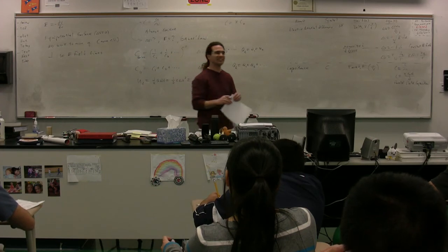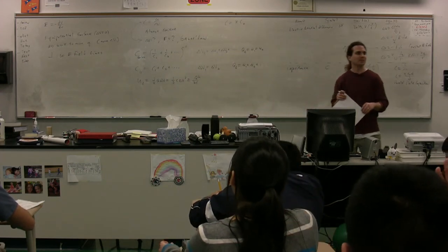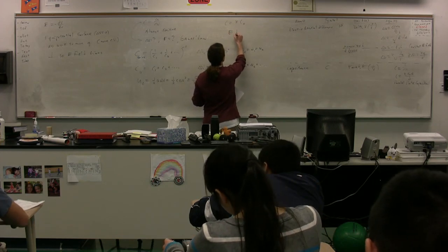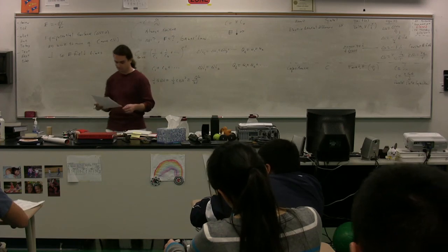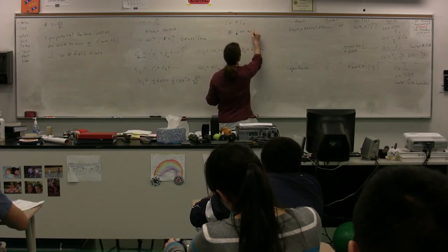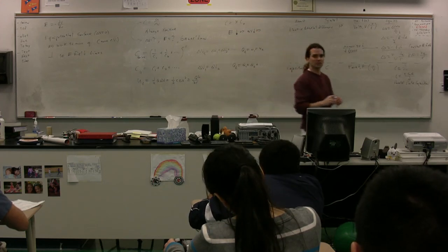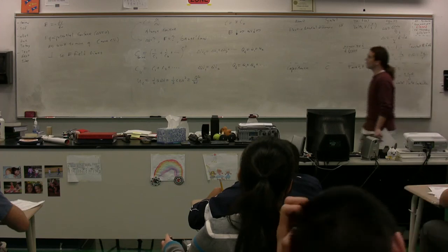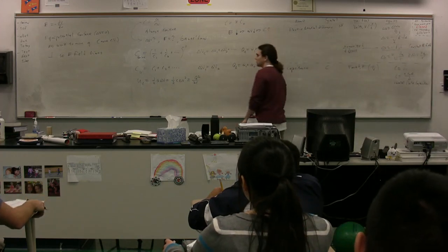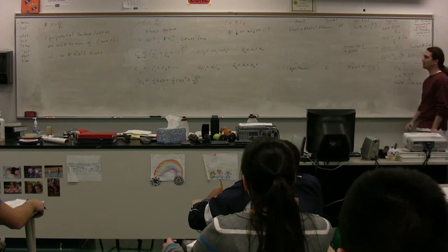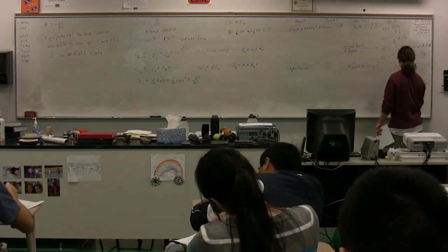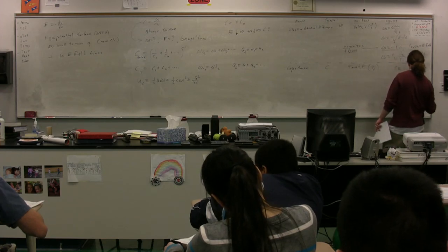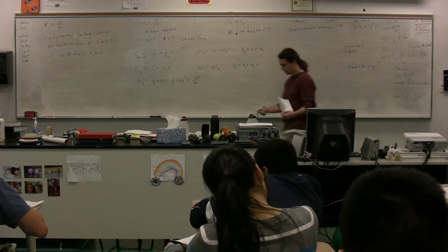The capacitance equals K, the dielectric constant, times C₀. The addition of a dielectric increases the capacitance of a capacitor. How? It decreases the electric field, which decreases the electric potential difference. Because capacitance has the electric potential difference in the denominator, decreasing the electric potential difference increases the capacitance. Capacitors in parallel simply add: C1 plus C2. Capacitors in series: one over C1 plus one over C2, and so on.